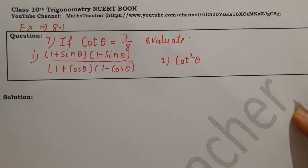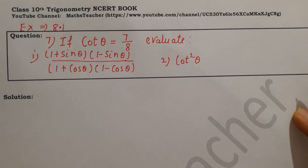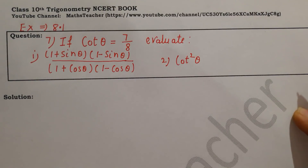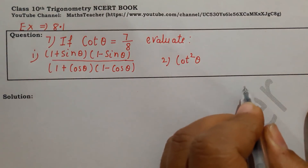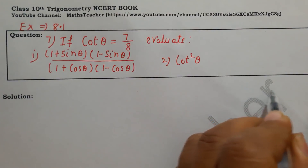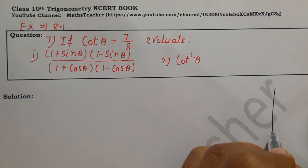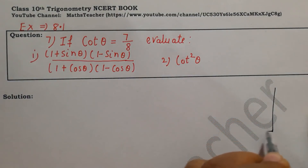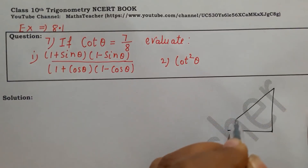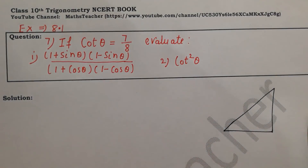If you have watched my last video on Exercise 8.1, you will understand how to do this type of question. Now we will find the trigonometric ratios, but here we have a whole term to find the value. So first we will complete the triangle — we will draw a right angle triangle.